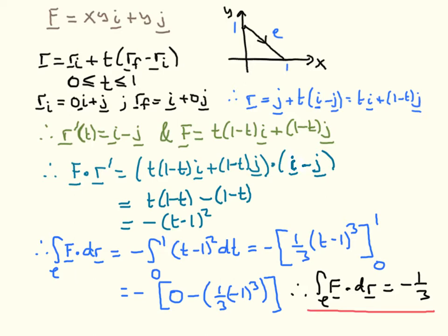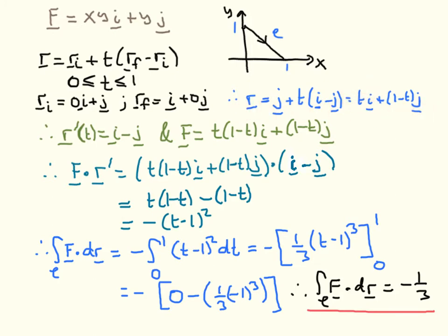We know how to parameterise a straight line. The initial position has coordinates x=0, y=1, and the final position has coordinates x=1, y=0, with parameter t going from 0 to 1. Tracing this through, the position vector as a function of t is r(t) = t·i + (1−t)·j. Differentiating with respect to t gives the derivative i − j.